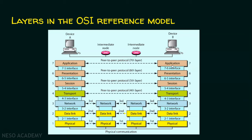The presentation layer interacts with the application layer above it and the session layer below it. For the sender, data flows from layer 7 to layer 1; for the receiver, data flows from layer 1 to layer 7. So always, there is interaction between adjacent layers — for example, the transport layer can interact with both the network layer and the session layer.